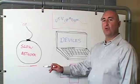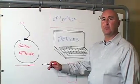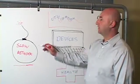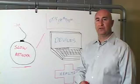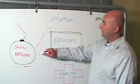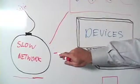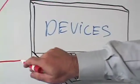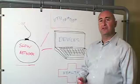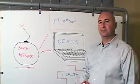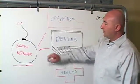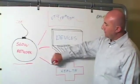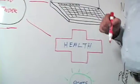We find there are four basic elements that will affect the slow network. The first one is overall network utilization. The second will be actual devices on the network that are consuming a large amount of bandwidth. The third is the health of the network.